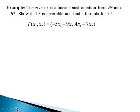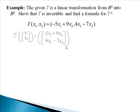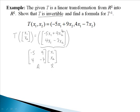We're given a linear transformation T from R2 into R2, and we want to show that T is invertible and find a formula for T inverse. We've written it horizontally, but now we want to write T vertically. We can then rewrite this as matrix A — negative 5, 9, 4, negative 7 — multiplied by the vector x. So we have matrix A times vector x. We want to show that T is invertible, and by Theorem 9, our transformation is invertible if and only if matrix A is an invertible matrix.